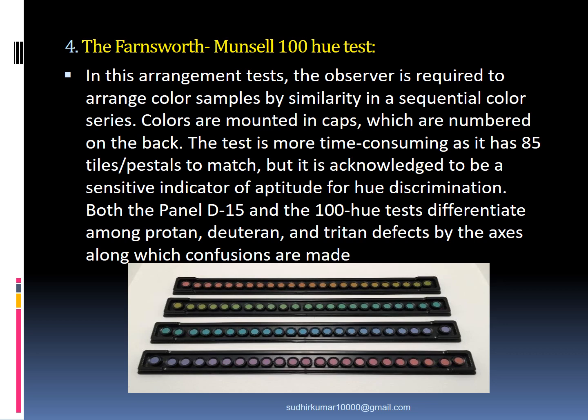Ishihara pseudochromatic charts are most commonly used in our OPDs. Another method of testing color vision is the Farnsworth-Munsell 100 hue test. In this arrangement test, the observer is required to arrange color samples by similarity in a sequential color series; colors are mounted in caps numbered on the back. The test is time-consuming as it has 85 tiles or pastels to match, but it is acknowledged as a sensitive indicator of aptitude for hue discrimination. The D15 panel is a variant with fewer items. Both the D15 panel and the 100 hue test differentiate among protan, deutan, and tritan defects by the axes along which confusions are made.